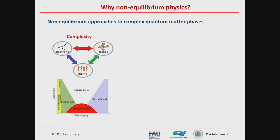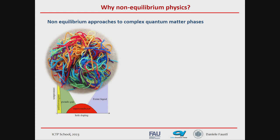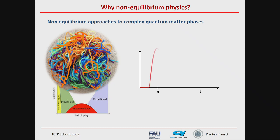What we do in order to understand the physics of those systems is to bring them out of equilibrium. Whenever you have all the degrees of freedom interacting in a non-trivial way, the idea is to take one of these degrees of freedom out of equilibrium. By looking at the relaxation dynamics, we try to understand what are the leading physical mechanisms in the systems.